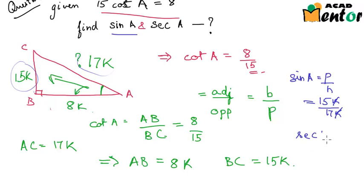Similarly, sec A would be hypotenuse by base, and hypotenuse is 17K and base is 8K for angle A. Remember that we are finding sec for angle A. So this would be 17K by 8K, or just 17 by 8.